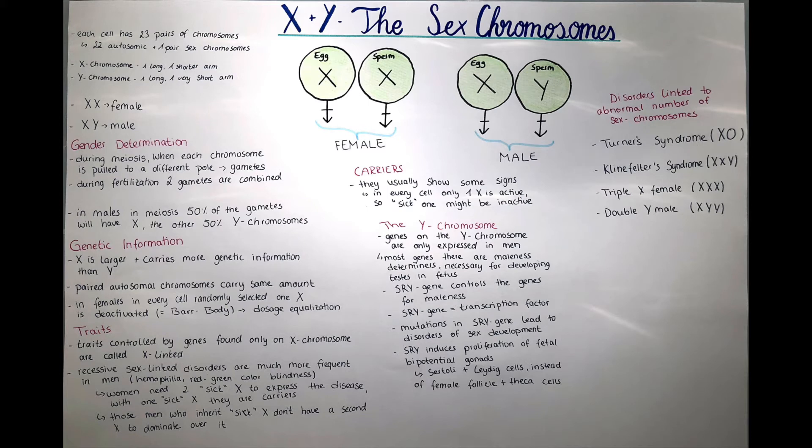During meiosis, when each chromosome is pulled to a different pole and gametes are created, the X and the Y, or the X and the X, are individually packaged into one gamete. During fertilization, two gametes are combined, so either X and X or X and Y. I drew that there on the poster so you can see it, that this determines if it's going to be a female or a male.